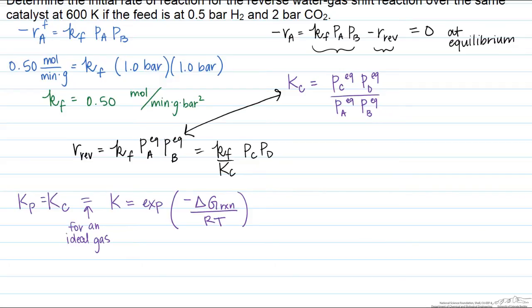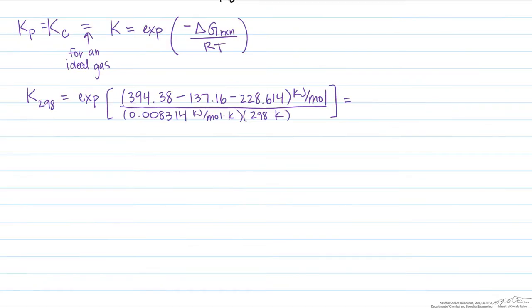Let's evaluate K at 298 Kelvin. We compute the equilibrium constant as the exponential of the negative Gibbs free energy of products minus reactants. The Gibbs free energy of formation of hydrogen is zero since it's in its elemental state. We divide by RT using a temperature of 298 Kelvin, because the experimentally measured Gibbs free energies of formation were also measured at 298 Kelvin. Solving this gives a value of around 103,000.